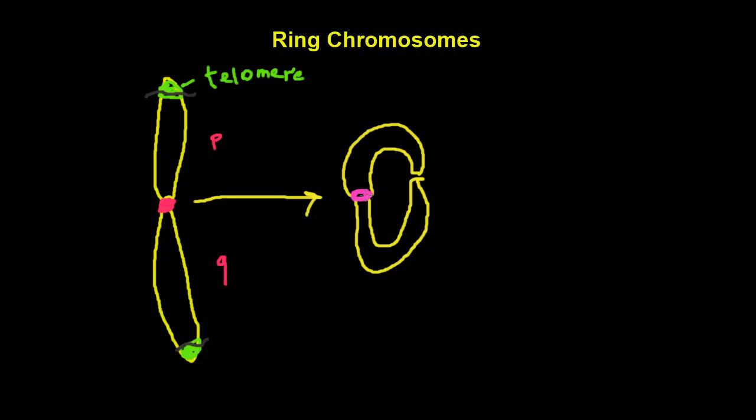So this is our centromere and telomeres are just lost and degraded. A chromosome shaped like rings form in one out of 25,000 conceptions.